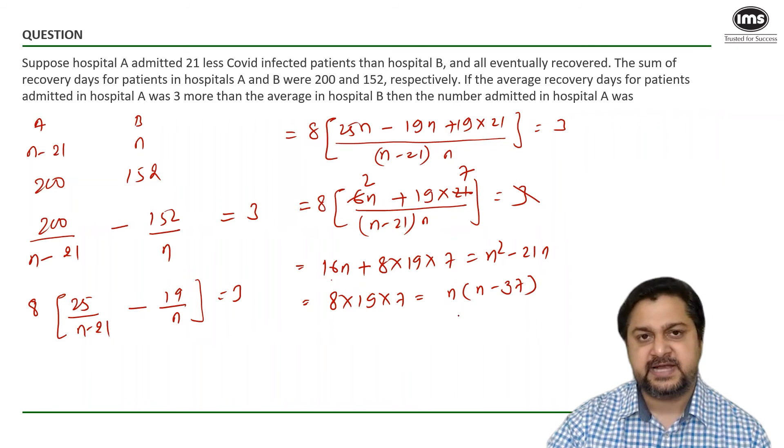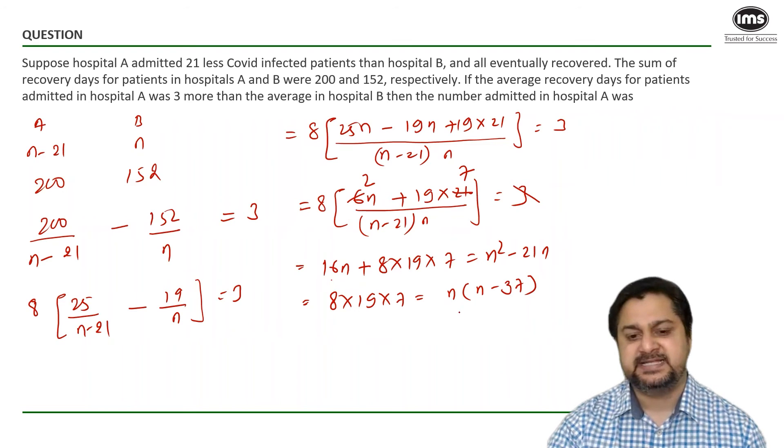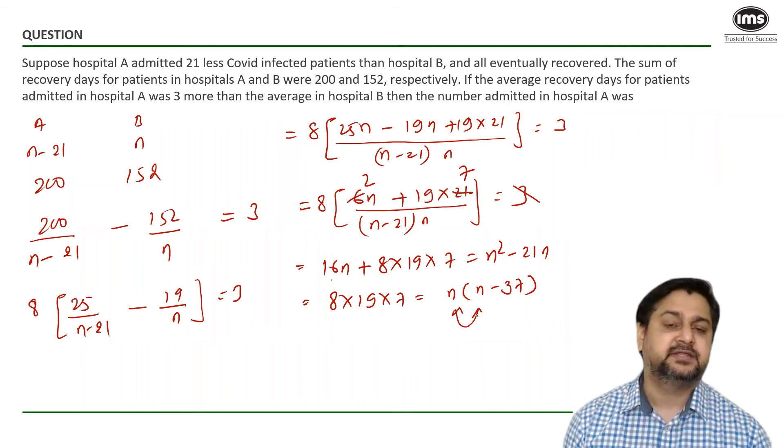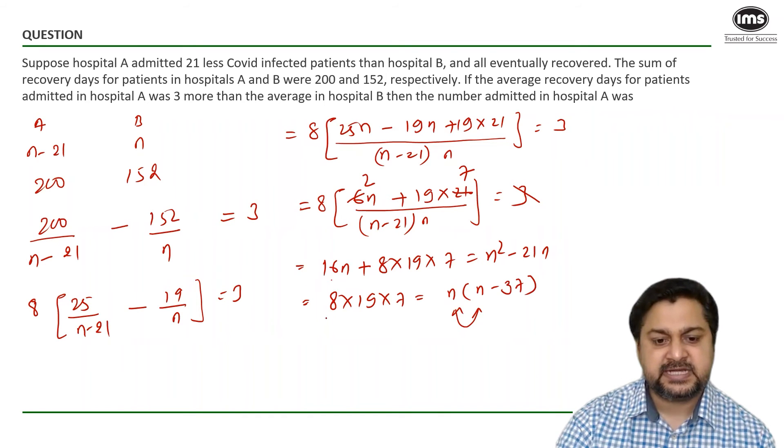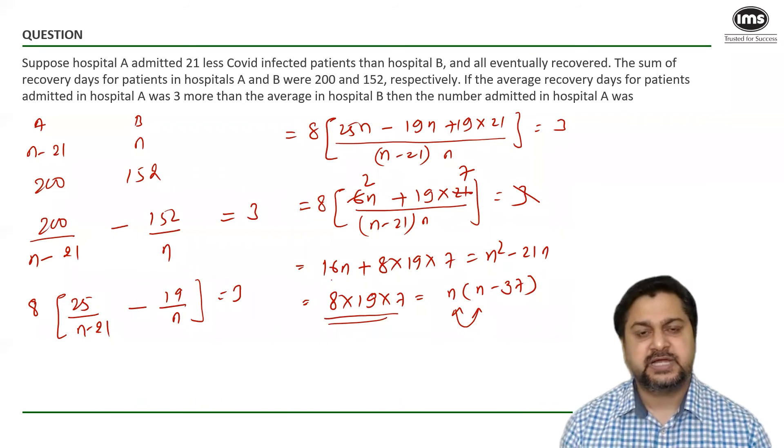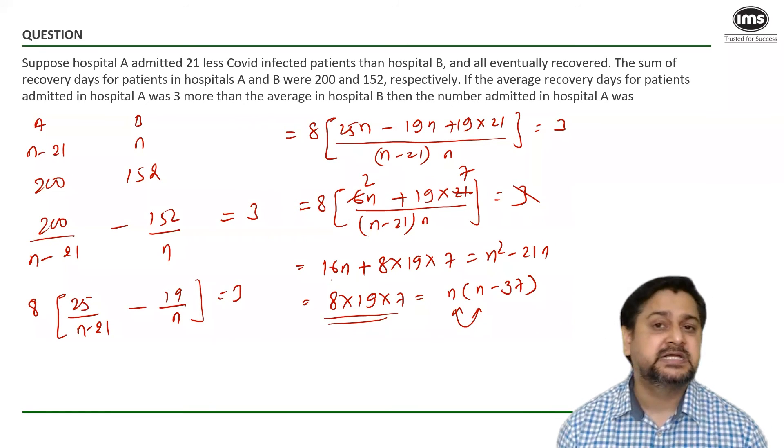If you observe on the right hand side we've got N into N minus 37. So it's basically the product of two numbers. And the difference between those two numbers is 37. So can I create two numbers with the help of these values 8, 19 and 7. So that the difference between both the numbers is 37.